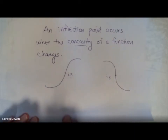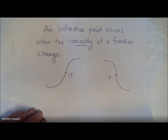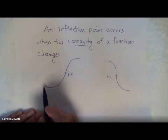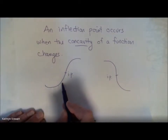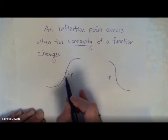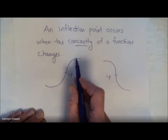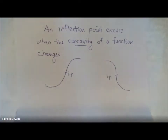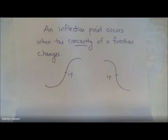Now, if you recall, concavity has to do with how the slope of a function is changing. A function is concave up when the slope is increasing. So here the slope is increasing, and now the slope is decreasing. If I'm talking about the change in a slope, that's the same as the change in a derivative — the derivative of a derivative. What do we call the derivative of a derivative? The second derivative.